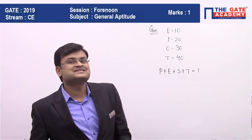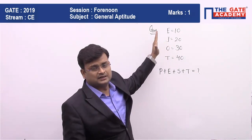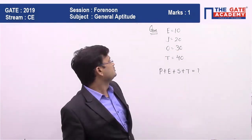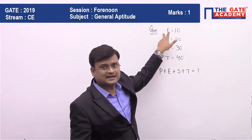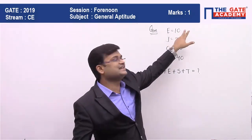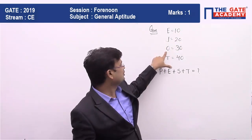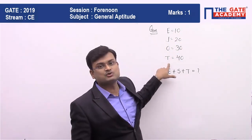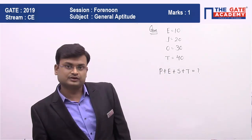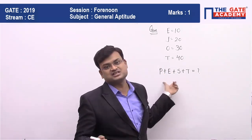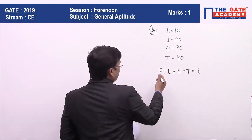The logic of the value should be consistent with what is given in the question. If you look closely, e is the 5th alphabet and its value is 10 — they are doubling the position. j is the 10th alphabet, o is the 15th alphabet, t is the 20th alphabet, and the values are double their positions. So we need to find which positions these alphabets hold.